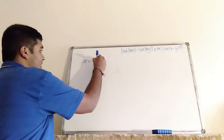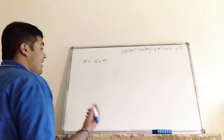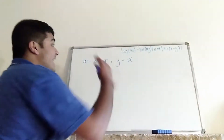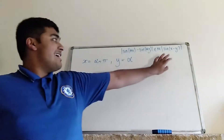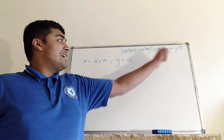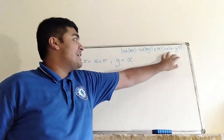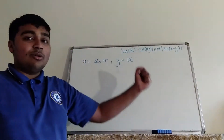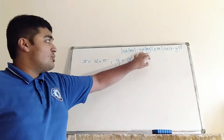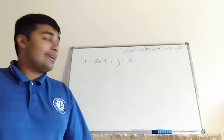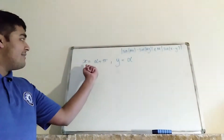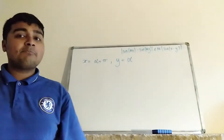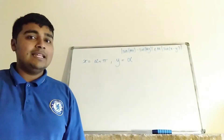So let x equal some alpha plus π, and then we're going to have y equal to alpha. The reason for this is because on the right-hand side, to find a counterexample, it would be ideal if we could get that term to zero, because we know that this side is non-negative. So all we need to do is ensure that the left-hand side is positive, and we've found a counterexample. If x equals alpha plus π and y equals alpha, then x minus y is just π, and we know that sine of π is zero.